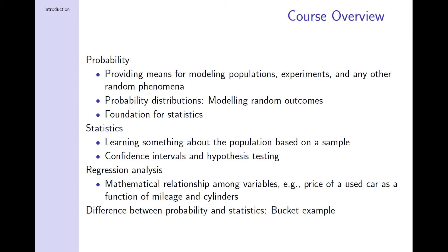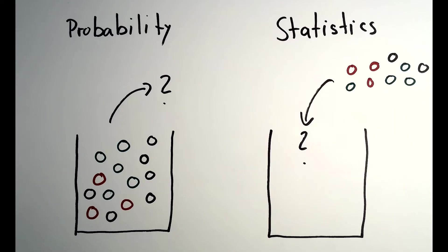You are taking a subset of the population and you are conducting a test on that subset. That subset is called a sample, and we are going to use statistics to say something about the population. This concept is best illustrated with an example about two buckets, to illustrate the difference between probability and statistics.